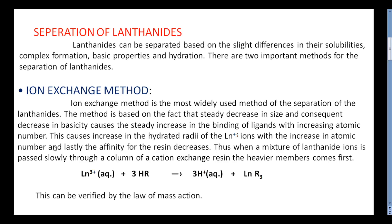And lastly, the affinity for the resin decreases. Thus, when a mixture of lanthanide ions is passed slowly through a column of a cation exchange resin, the heavier members come out first.